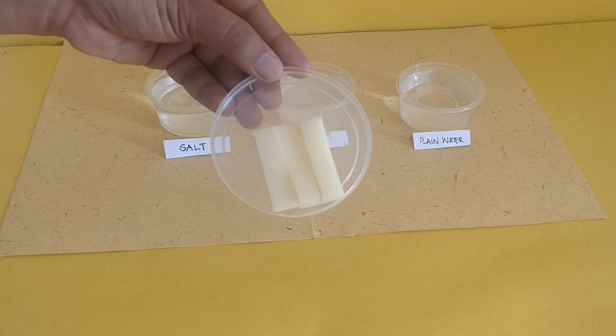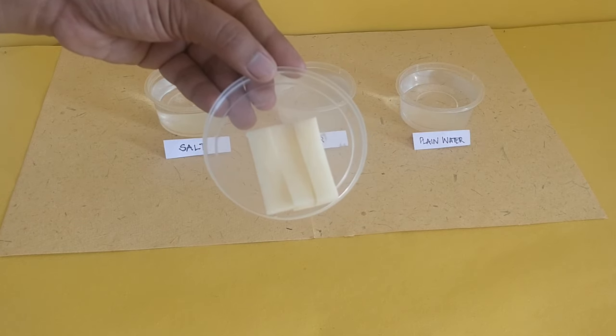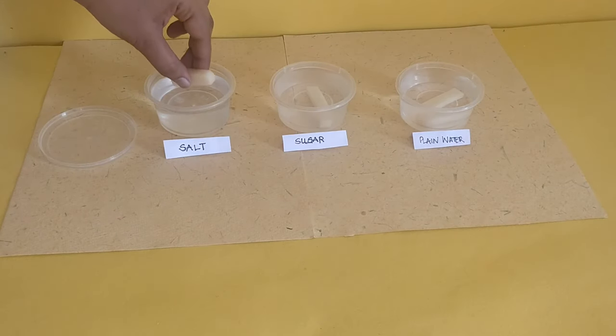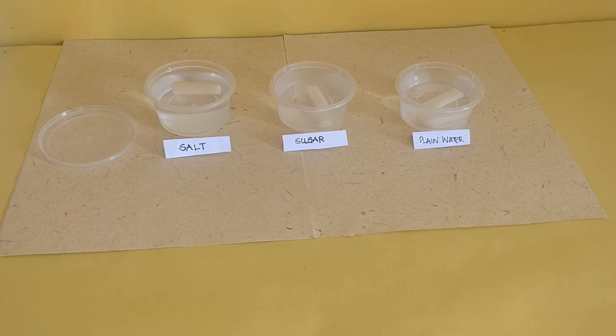Now, place one strip of potato in each of the cups. Leave the potato strips in the cups overnight.